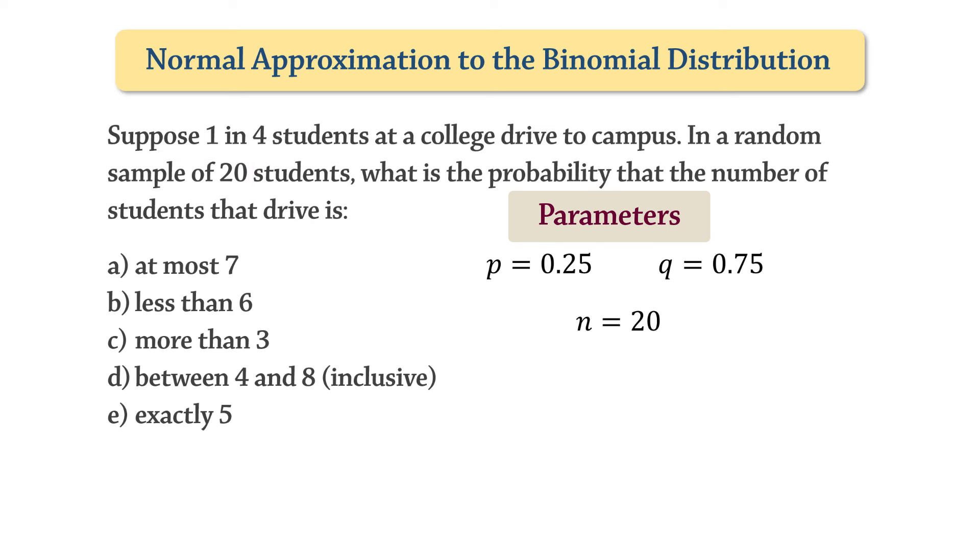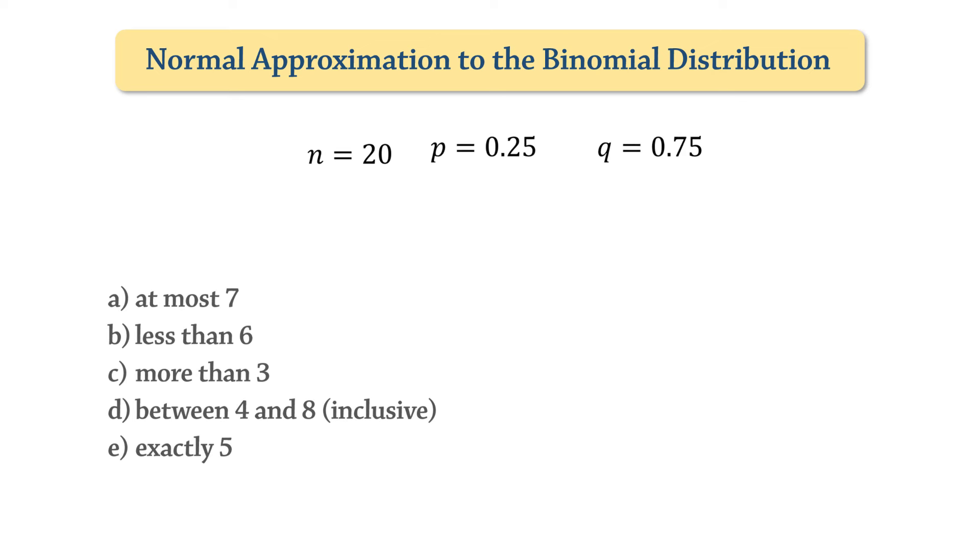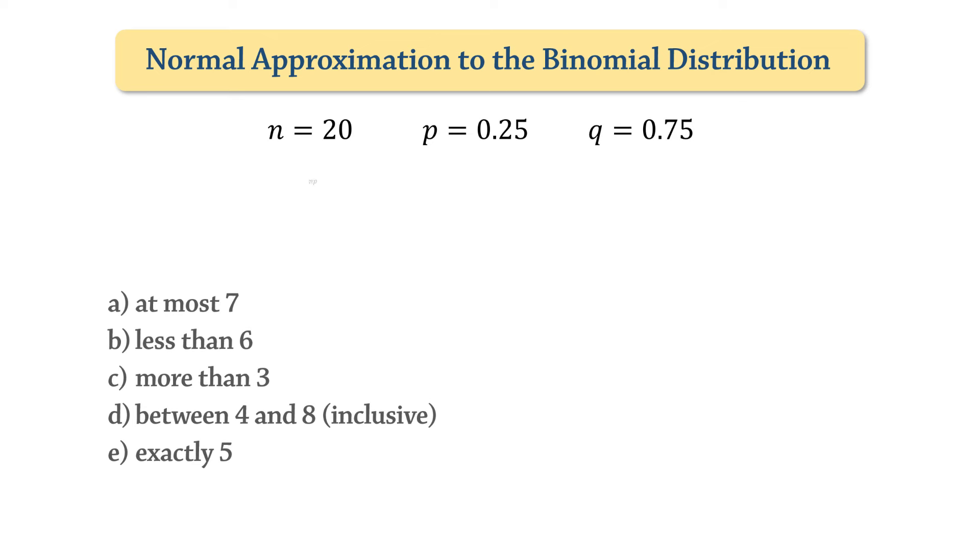Now, to use the normal approximation, we need to ensure that the expected number of successes np and the expected number of failures nq are both greater or equal to 5. Note that some authors require that these be at least 10, but we will use 5 for the descriptive purpose of this video. Plugging in the values, we see that both np and nq are at least 5.